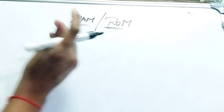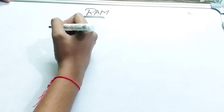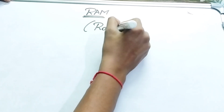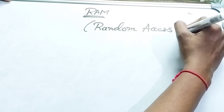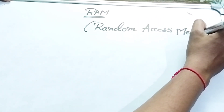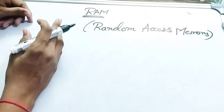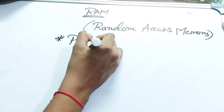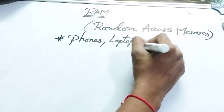First, let's start with RAM. The full form of RAM is Random Access Memory. Random Access Memory — where can we use this? We can use Random Access Memory in main phones, laptops, and watches.